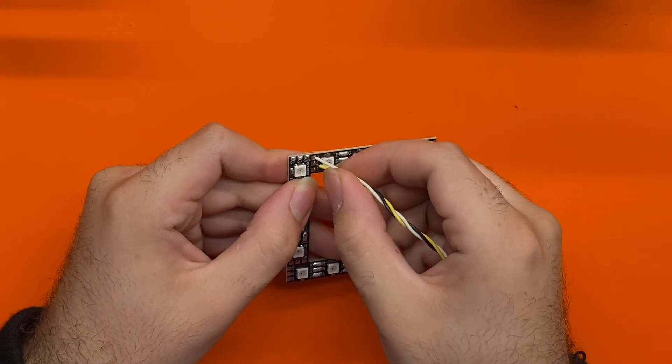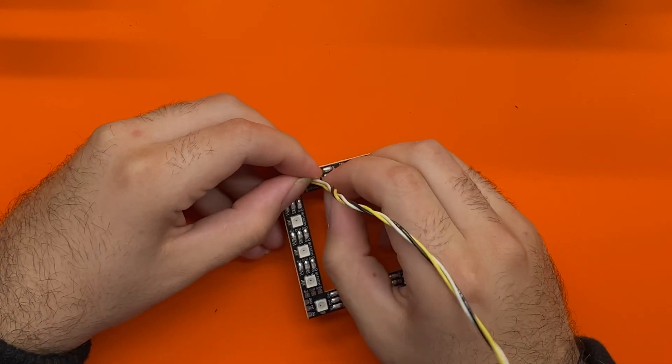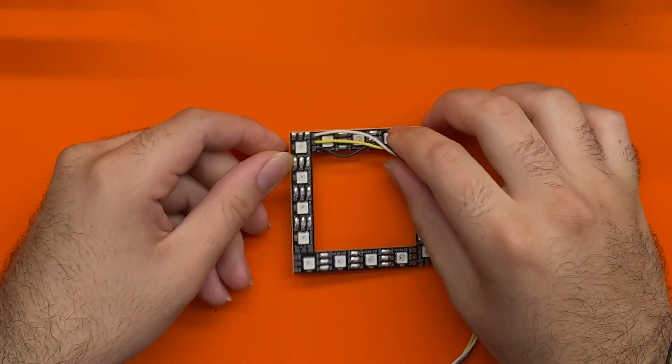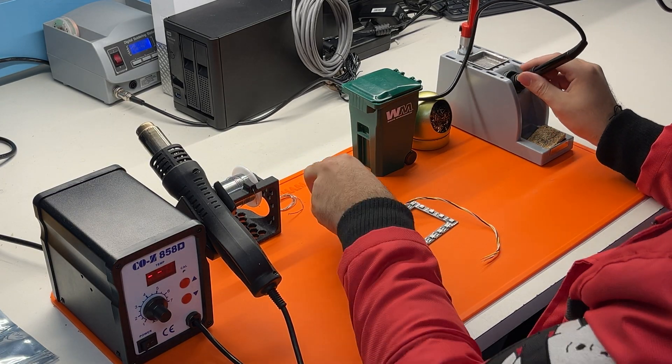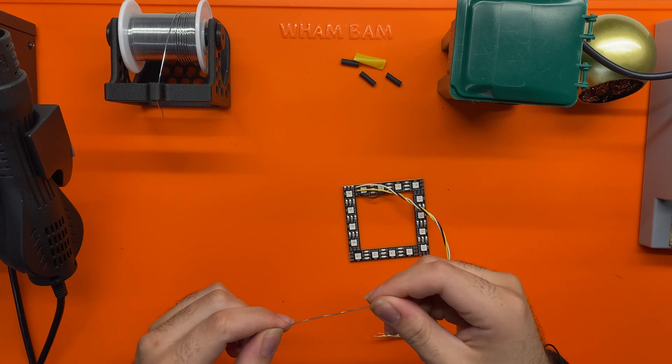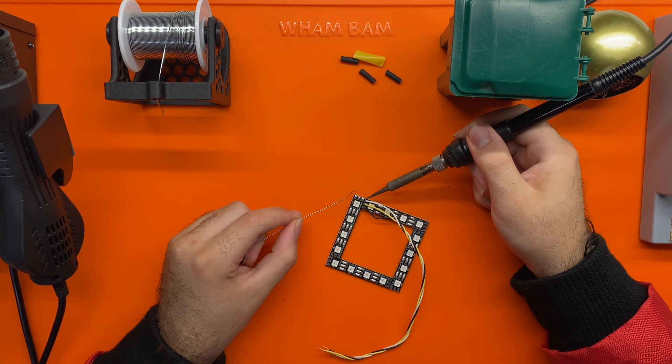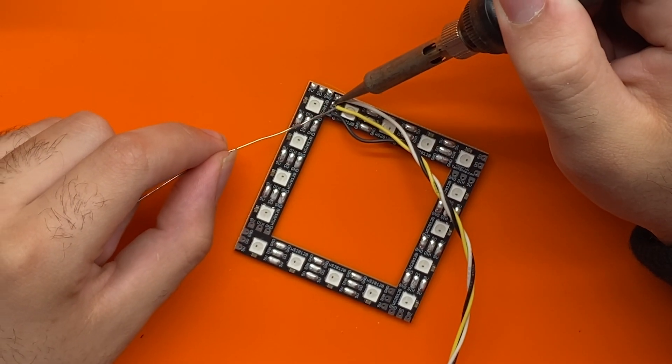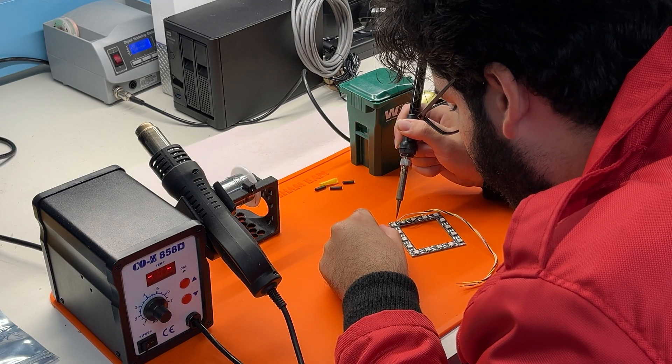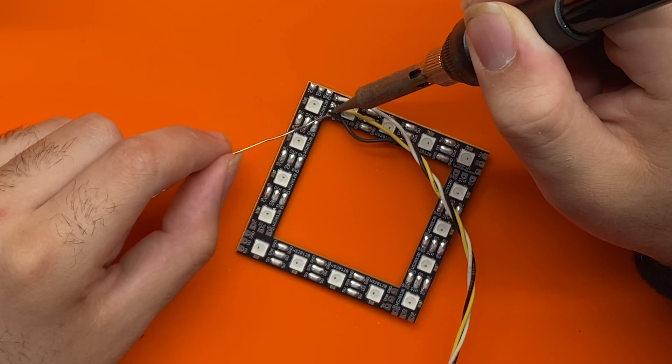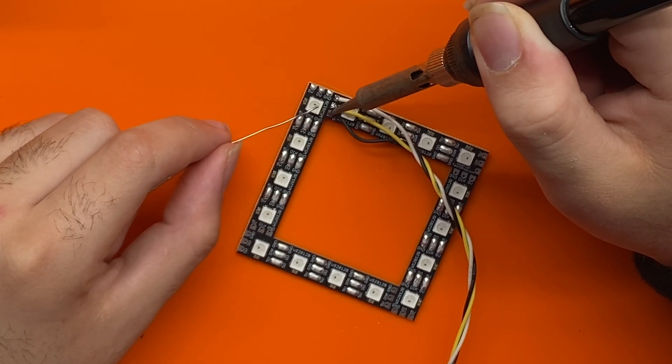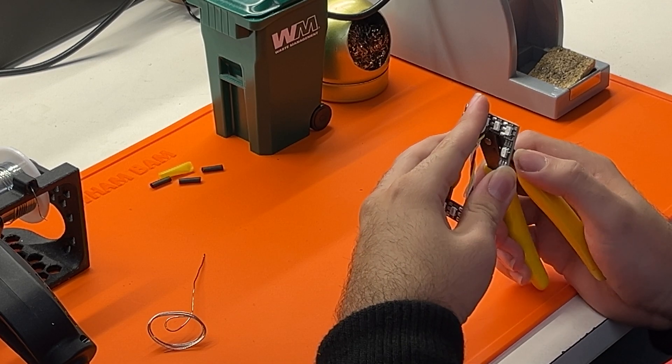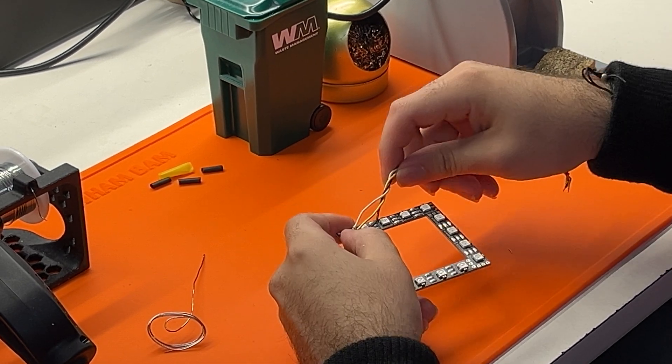Hold on to the other side, get it nice and flush. We'll just solder this into place. Make sure we don't bridge these connections. And then just try to trim off the excess on the back.